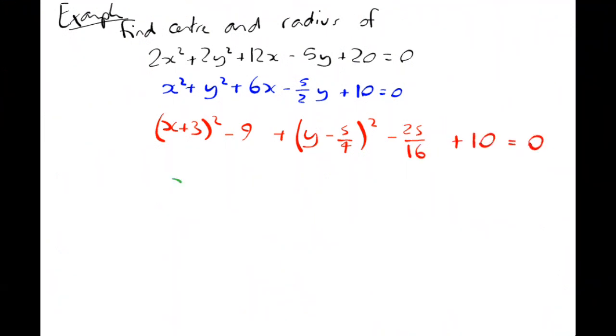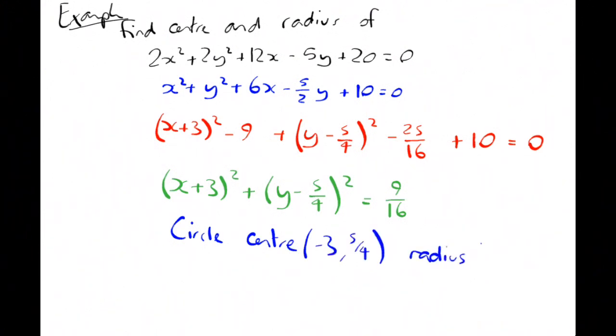Tidying everything up now, I get x plus 3 all squared plus y minus 5 over 4 all squared equals 9 over 16. I can write down now the circle has a centre minus 3, 5 quarters and a radius of 3 over 4.